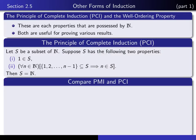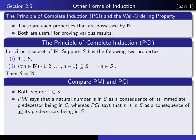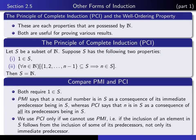Let's compare the principle of mathematical induction with the principle of complete induction. Both require the basis step that 1 be an element of S. The principle of mathematical induction says that a natural number is in S provided we know that its immediate predecessor is an element of S, whereas the principle of complete induction says that N is an element of S provided we know that all of its predecessors are in S. We should use PCI only if we're not able to get away with using PMI.